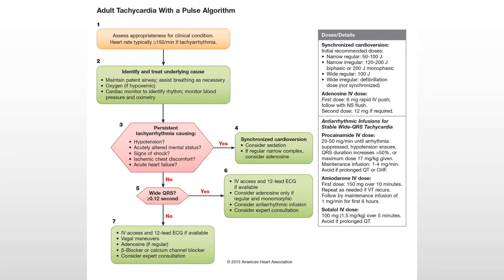This is adult tachycardia with a pulse — you saw this in prior coursework. We're going to assess for the appropriateness of the clinical condition. The American Heart Association defines this as a heart rate greater than 150. Tachycardia like climbing a flight of stairs is expected, so that's why we assess for appropriateness. Tachycardia at rest is always bad. If a patient is tachycardic at rest with a heart rate greater than 150, we're going to call that a tachyarrhythmia.